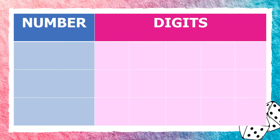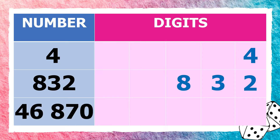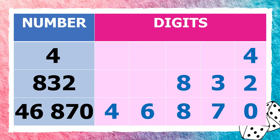Before we start learning about place value and value, let us have this short drill on identifying the digits of a number. Let us start with 4 — its digit is 4. How about the number 832? Its digits are 2, 3, and 8. And in the number 46,870, the digits are 0, 7, 8, 6, and 4.